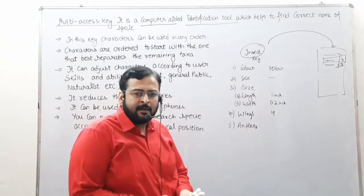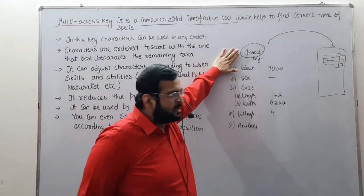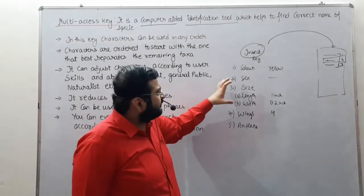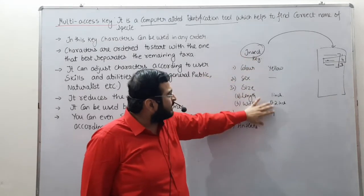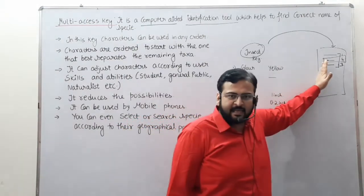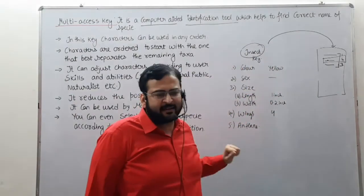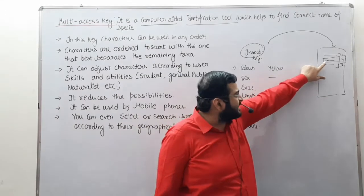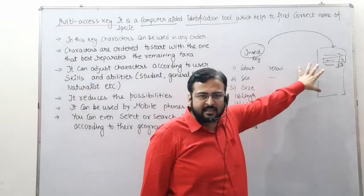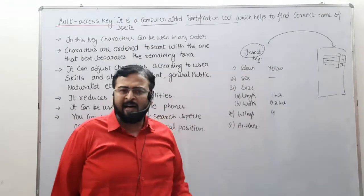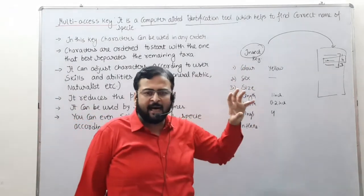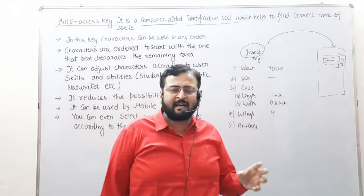It will show you the picture of that species along with its other characters. If the picture resembles the insect you saw in the jungle, your work is done — you have found the name of that insect through this software. So suppose we saw an insect, opened the software, typed in all the characters we observed, it showed possibilities, the top match was clicked, and the picture appeared. If the pictures are identical, we know the name of the insect we saw.